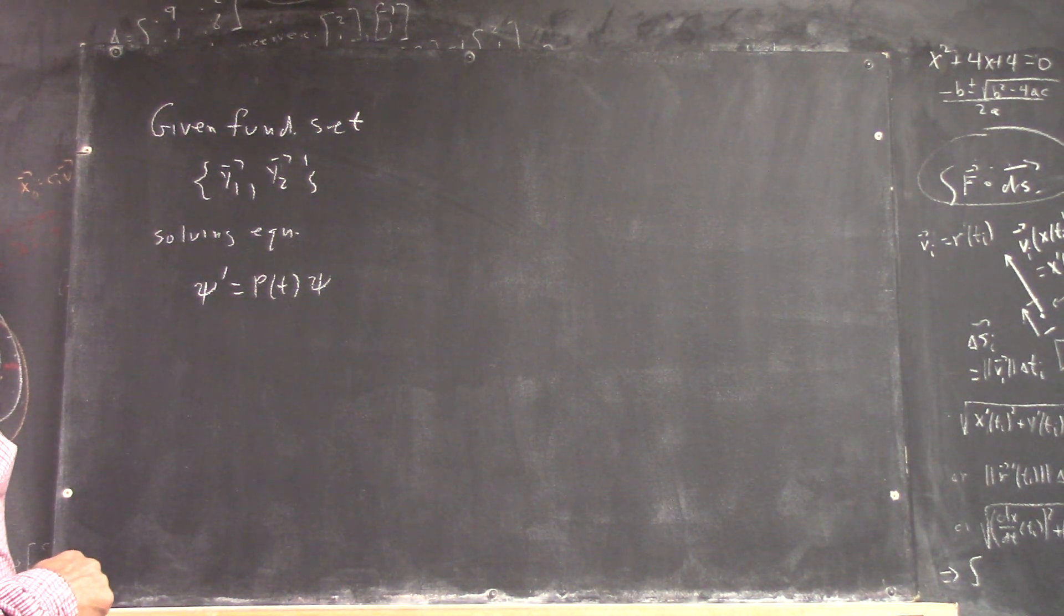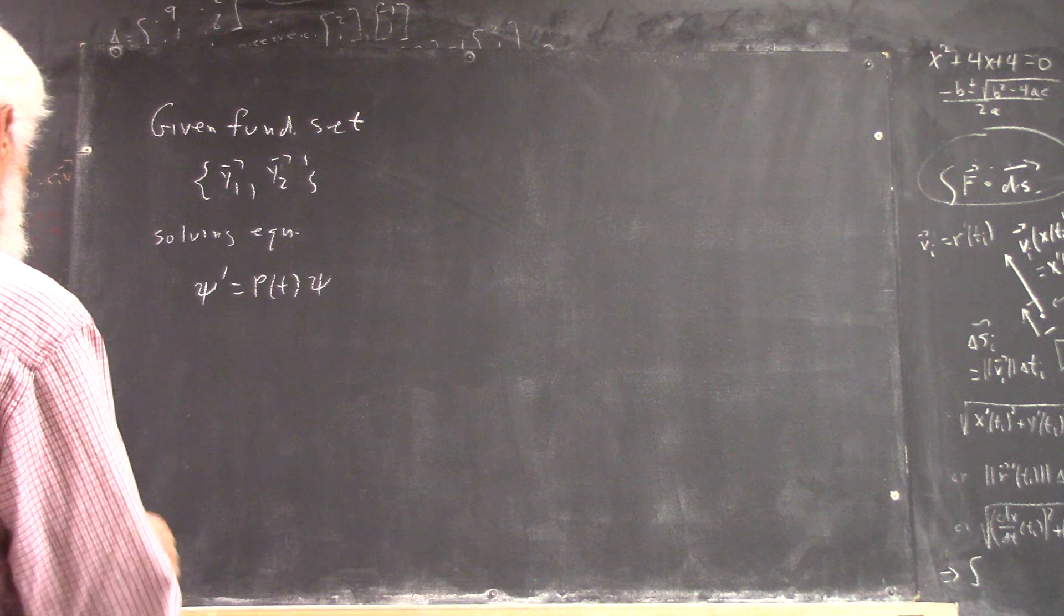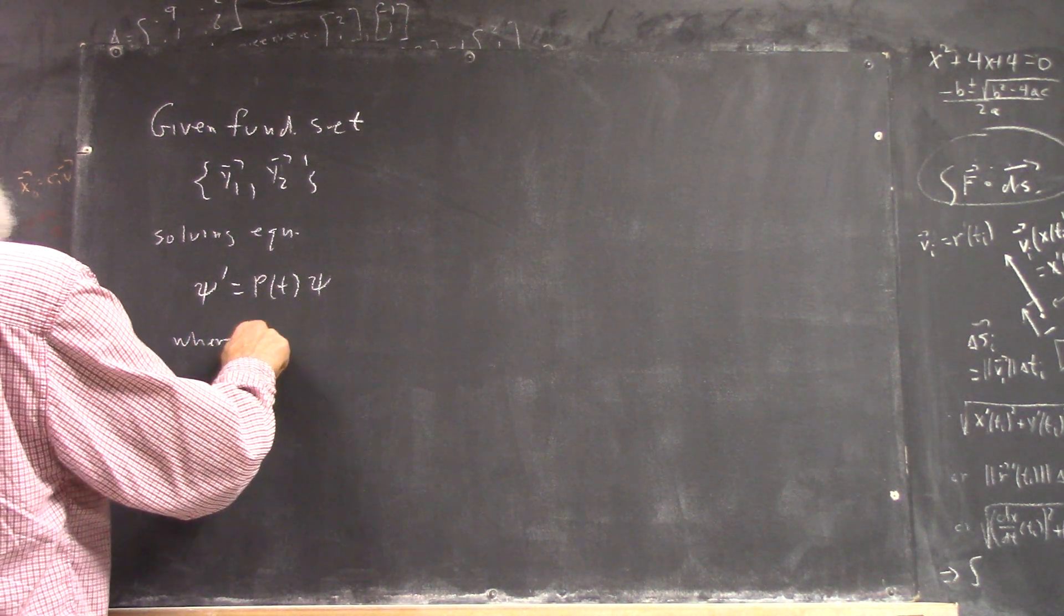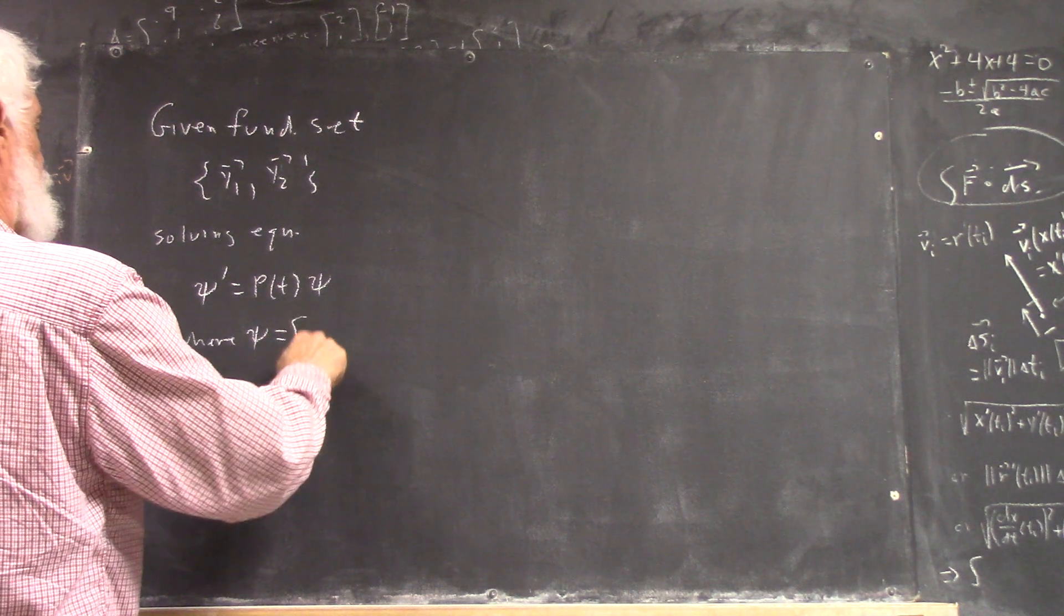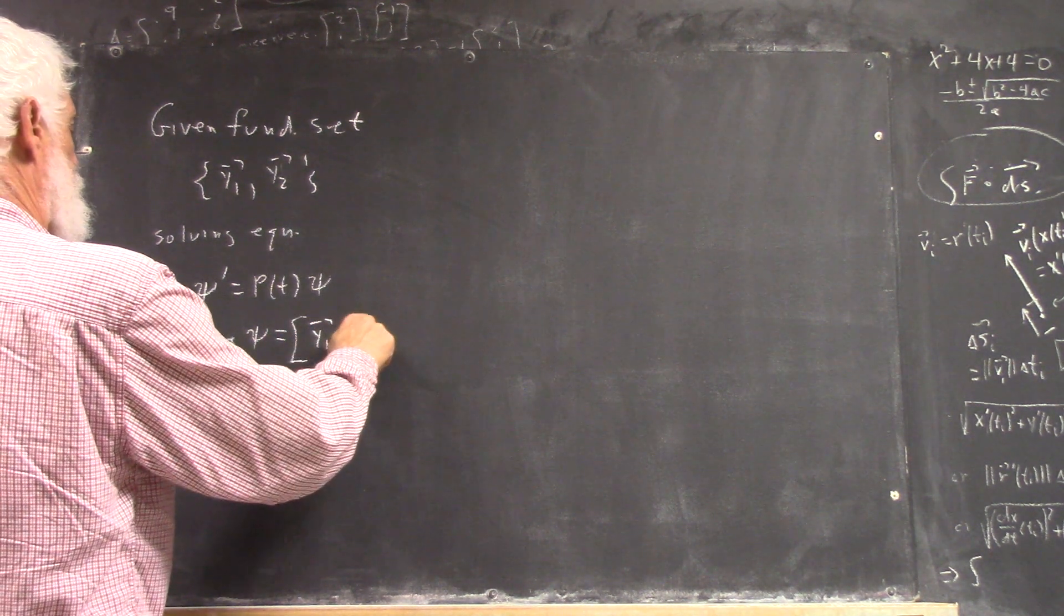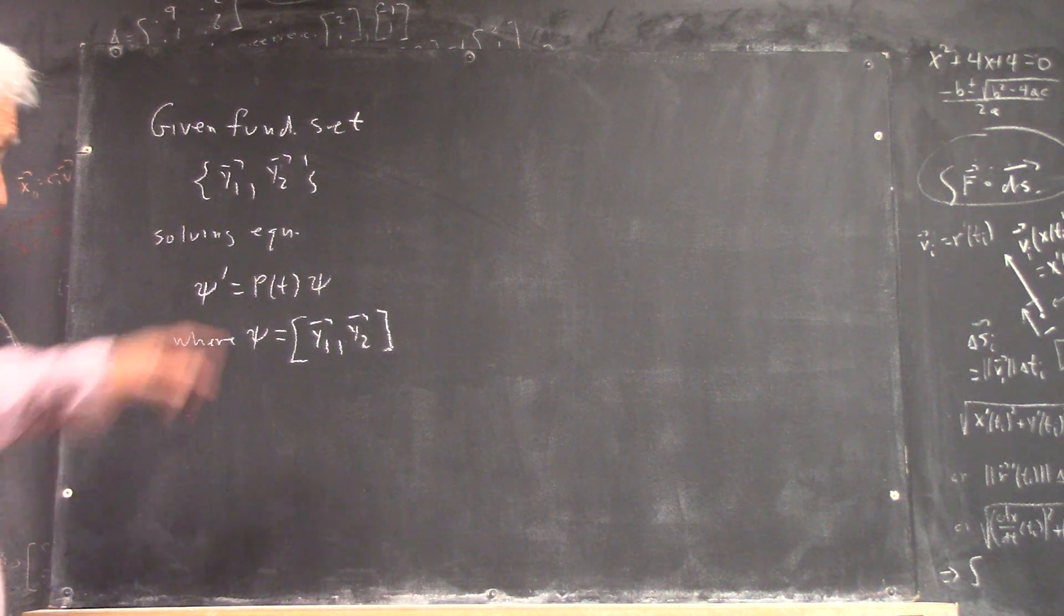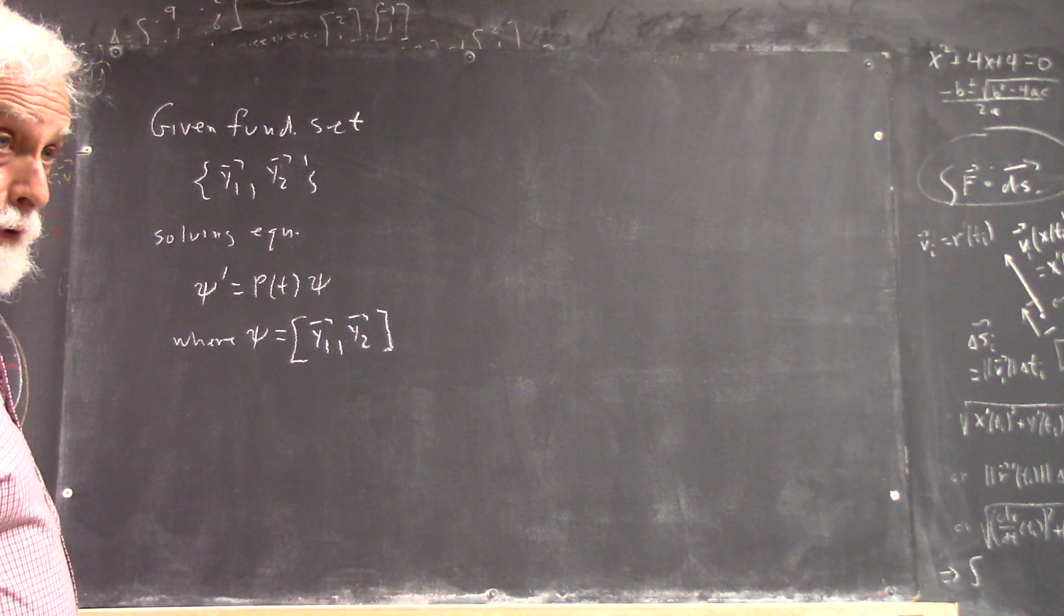So in the equation, ψ' = P(T)ψ, where ψ is a matrix, instead of column vectors y1 and y2.